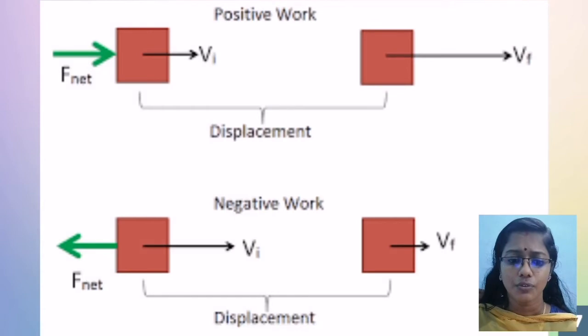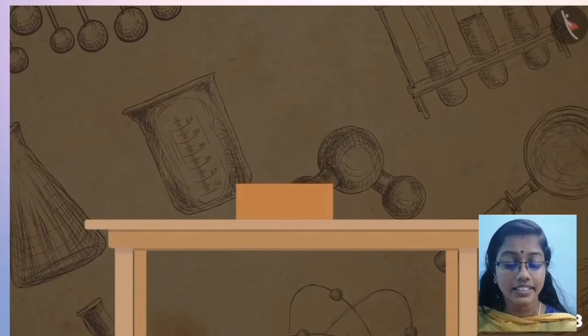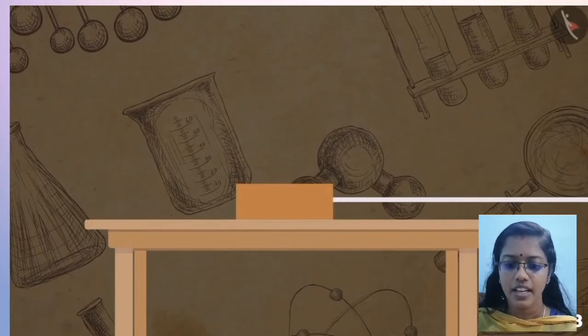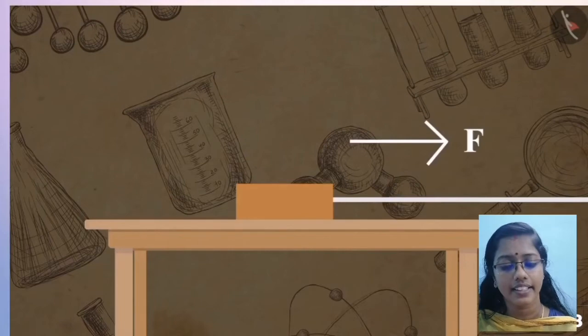Positive work occurs when applied force and displacement are in the same direction, and otherwise the work is negative. Let us consider an example. Place a rectangular block on a table and attach a string to it.